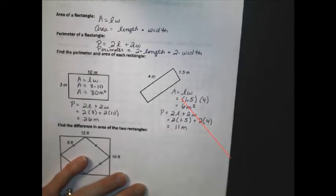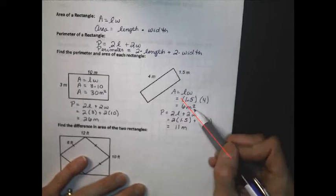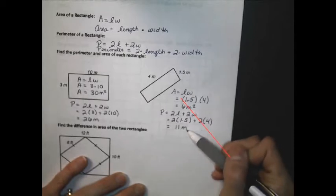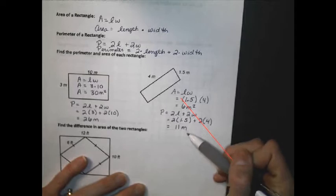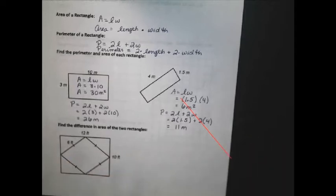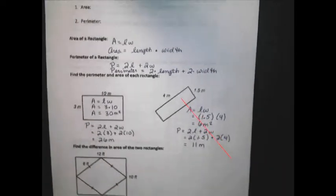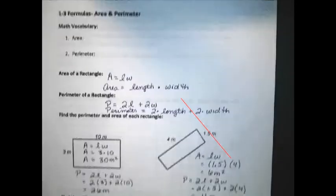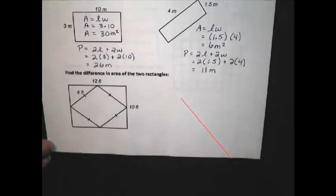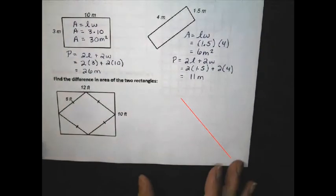Just a reminder, area is always unit squared, and perimeter is just unit. A common problem that we look at in geometry is to find the difference in the area of two shapes. So we're going to start out simply using rectangles to get us started.